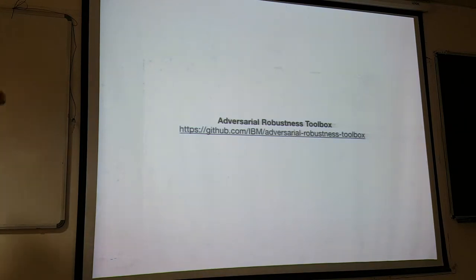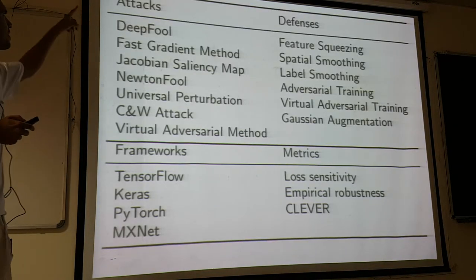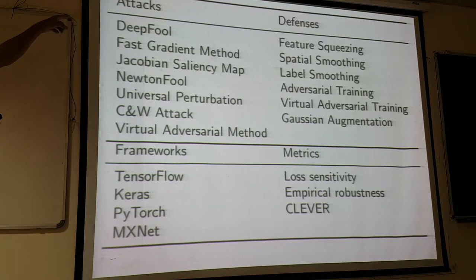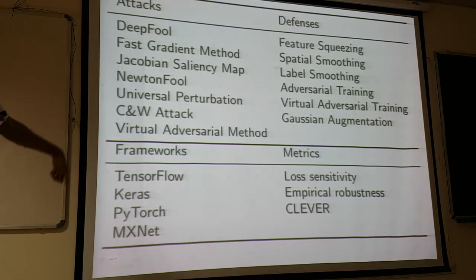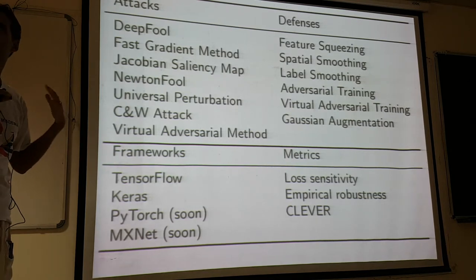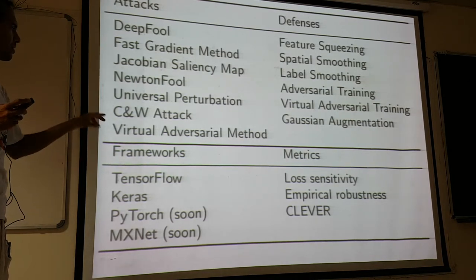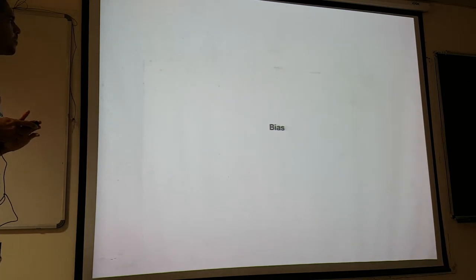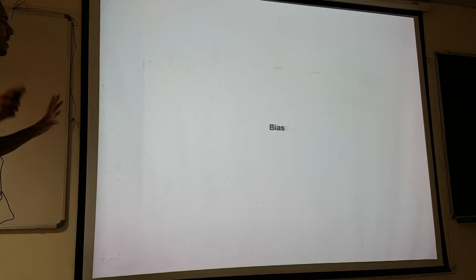To address that, we have open-sourced the Adversarial Robustness Toolbox, which has a set of attacks, defenses, and metrics built in. It's a Python library you can apply to your neural network to assess it.